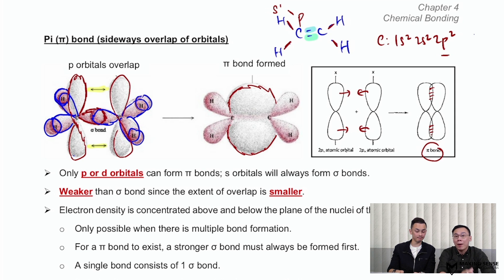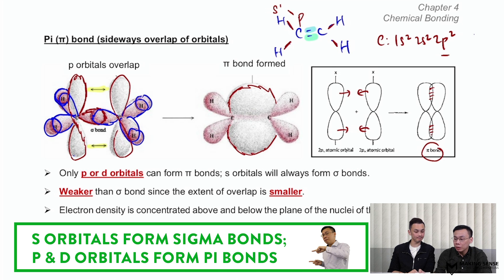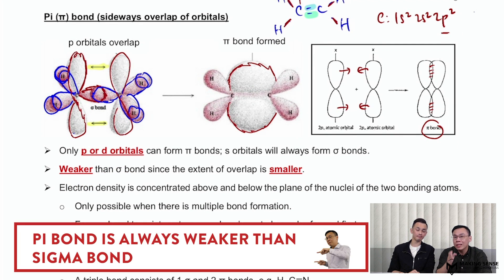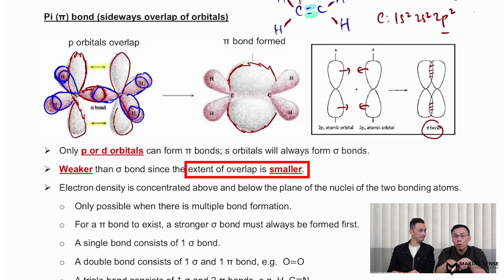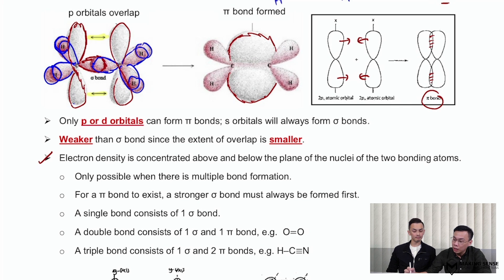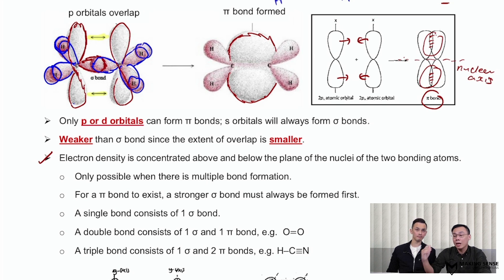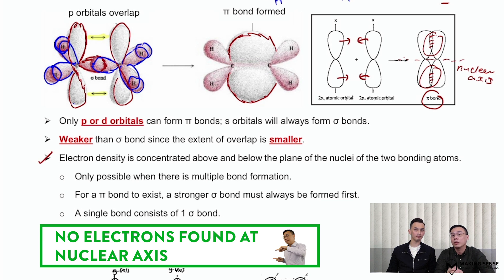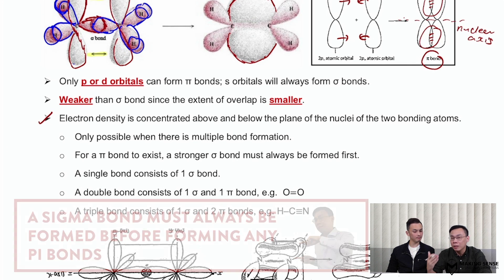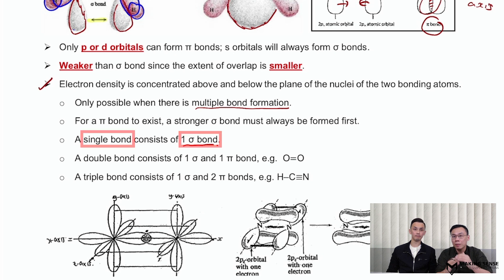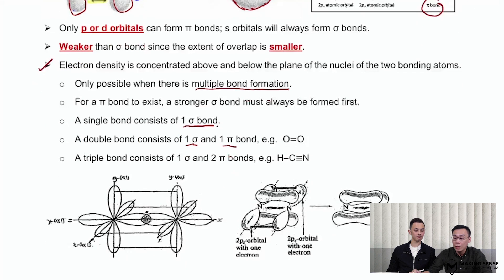To summarize: pi bonds can only be formed by p or d orbitals — you will only see p orbital examples at A-level. S orbitals are always used to form sigma bonds. A pi bond is always weaker than a sigma bond because the extent of overlap is smaller — side-on overlap is less effective than head-on overlap. The electron density of the pi bond is concentrated above and below the nuclear axis. A pi bond can only be formed when a prior sigma bond has already been formed — pi bonds are only involved in multiple bond formation. A single bond is one sigma; a double bond is one sigma plus one pi; a triple bond is one sigma plus two pi bonds.